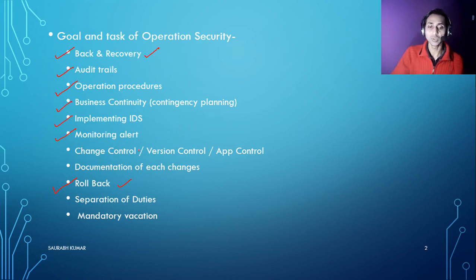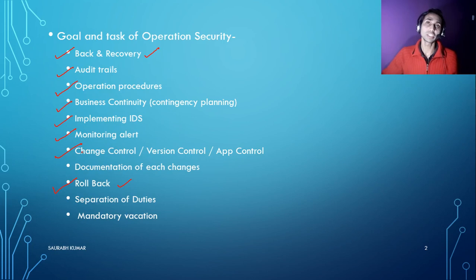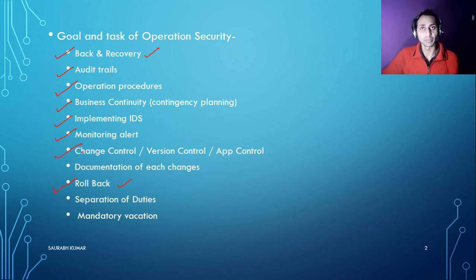Next is change control. If anyone in your company is planning to upgrade a version or add a new application, there must be a proper control system with a group of people — one person alone should not control the change process, otherwise they can do whatever they want. A change control boardroom environment with more than 3–4 people is the better approach, and changes should only be implemented when everybody agrees.